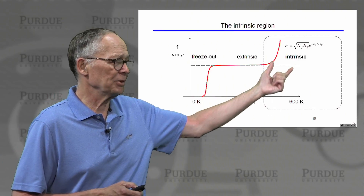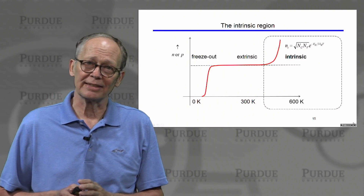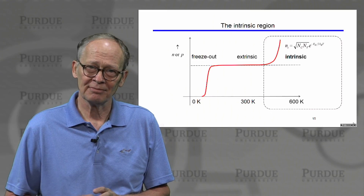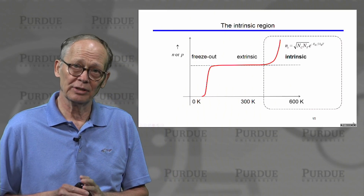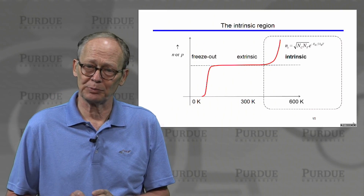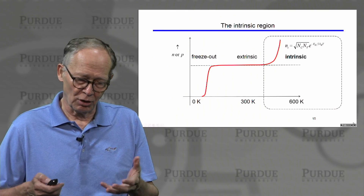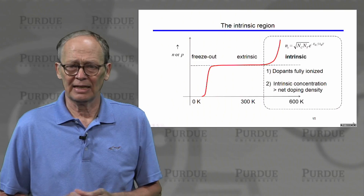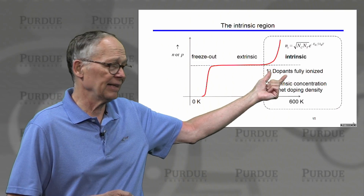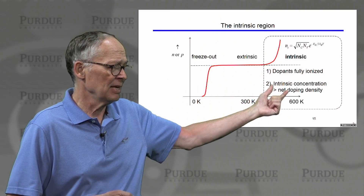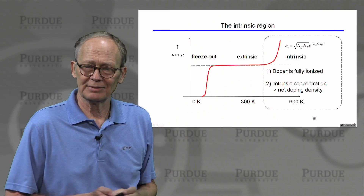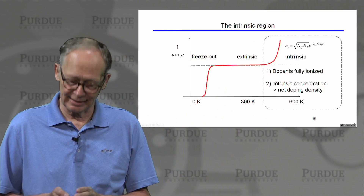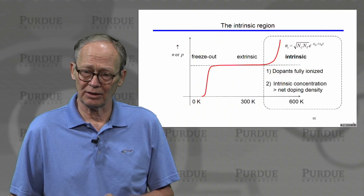At higher temperatures, the intrinsic carrier density increases exponentially and can no longer be ignored in the quadratic equation expressions. We have to solve the quadratic equation to find electron and hole densities. In this regime the dopants are fully ionized, so we can make that assumption, but we cannot assume the intrinsic carrier concentration is negligible — we need to include it in the calculations.